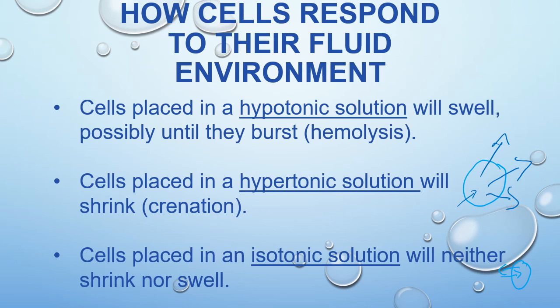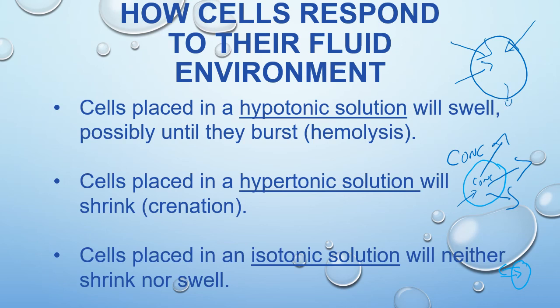In a hypertonic solution, the outside of the cell has a higher concentration — the concentration outside is high and inside is small. In a hypotonic solution, the movement of water is just the opposite: we're going to have a lot of water coming in and very little going out. Now we have a small concentration outside of the cell and a large concentration inside of the cell.